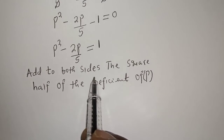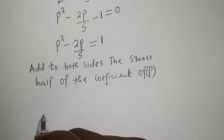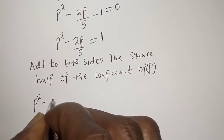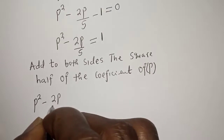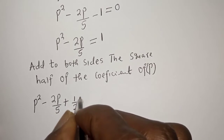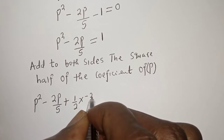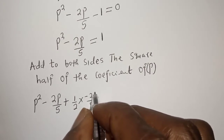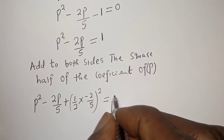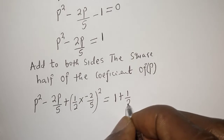Now let's add to both sides the square of half the coefficient of p. That is, p squared minus 2p over 5 plus one-half multiplied by negative 2 over 5, squared, equals 1 plus that same term.